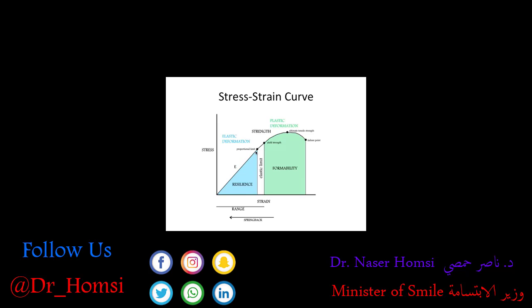As we apply more and more force, the object experiences more and more stress, and we reach the proportional limit, which is the highest point on the graph where it's still linear. This part gets a little confusing — even different sources online disagree on some of the definitions. The proportional limit is the furthest point along the curve where it's still a straight line — it's purely mathematical.